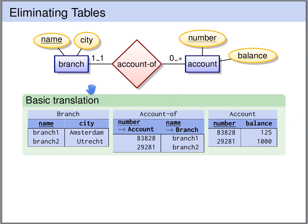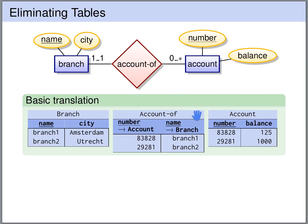Let's consider an example. Here we have a branch of some company with the name of a branch and the city where the branch is located. And we have an entity set account with a number and the balance. Every branch can have an arbitrary number of accounts, and every account belongs to precisely one branch. The basic translation creates three tables: a table for branch with attributes branch name and city, a table for account with attributes number and balance, and a table for the relationship set account of, containing foreign keys to the participating entity sets.